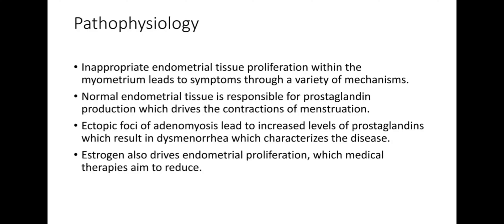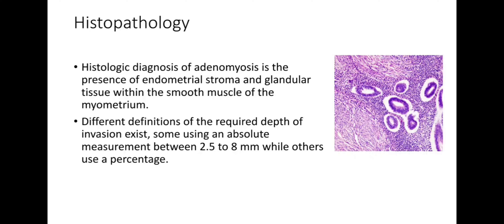The heavy menstrual bleeding commonly seen in adenomyosis is thought to be caused by a combination of factors, including increased endometrial surface area, increased vascularization, abnormal uterine contraction, and increased cell signaling molecules such as prostaglandins, eicosanoids, and estrogen.